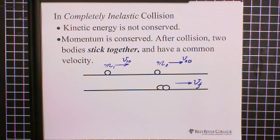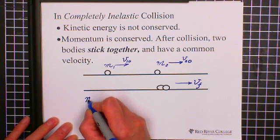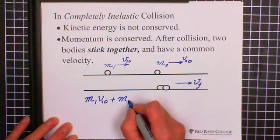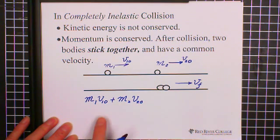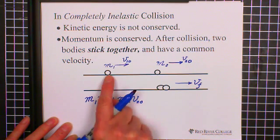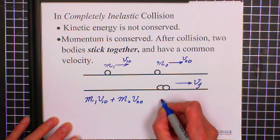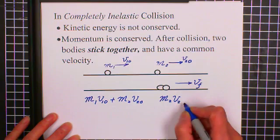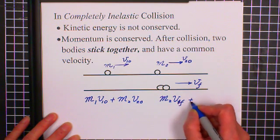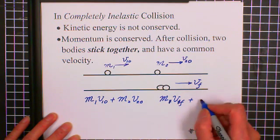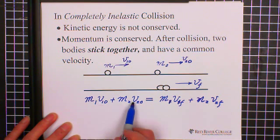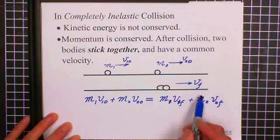So follow the conservation of momentum. Before collision, the momentum is M1 V1-0 plus M2 V2-0. This is before collision, the momentum of system. After collision, generally we have M1 V1 final plus M2 V2 final. Conservation momentum means before collision, the total momentum equals the total momentum after collision.